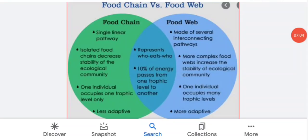If we talk about the differences and similarities of the food chain and food web, there is a similarity that both represent who eats whom, one organism eating another organism, and there is a transfer of 10% of energy from one organism to another.